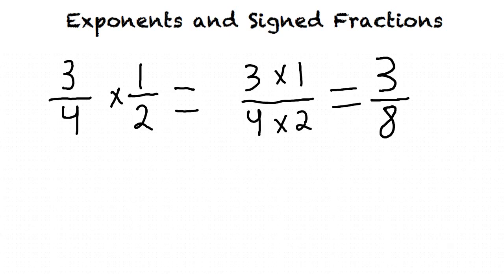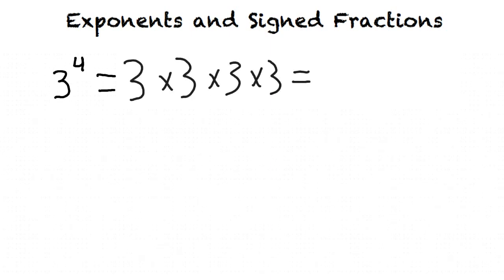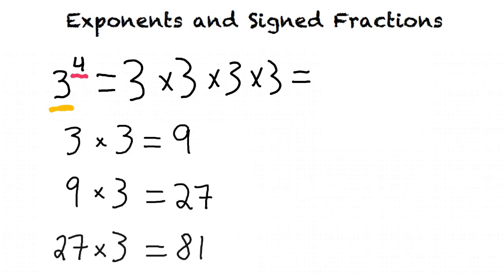Now can we try an exponent example? If we are given 3 to the fourth power, we can rewrite this as 3 times 3 times 3 times 3, because 3 is the base and we want to use it as a factor 4 times. 3 times 3 equals 9, and 9 times 3 equals 27, and 27 times 3 equals 81. So our answer is 81.